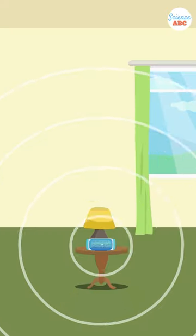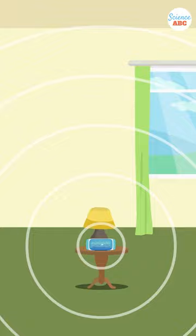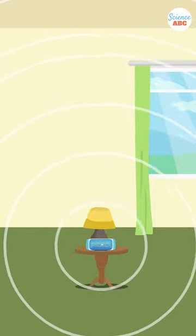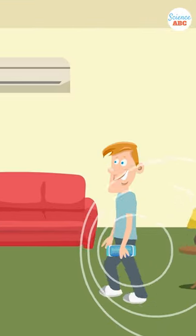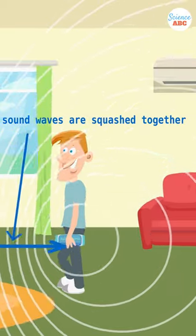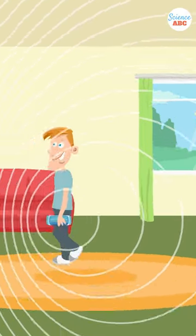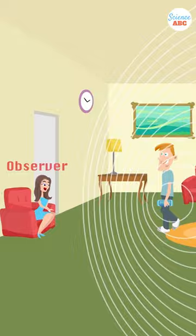When the source is stationary, the crests emanate and grow bigger in a symmetrical pattern. However, when the sound source starts to move, the crests that travel in the same direction as the sound source get squashed together, causing each wave to reach the observer swifter than its predecessor.